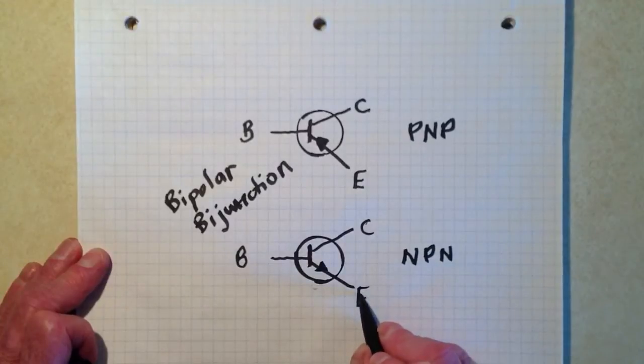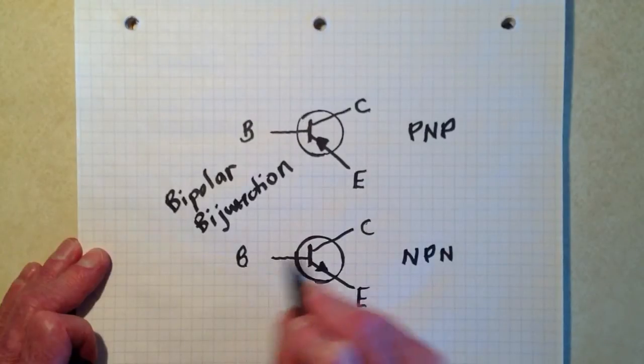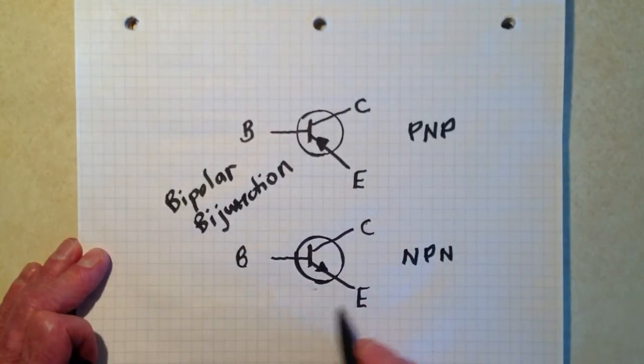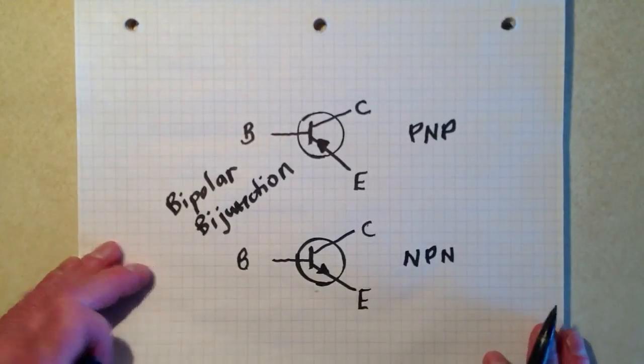Here we have the NPN. The emitter is N-type material. The base is P-type, and the collector is N-type. NPN. Those are the basic symbols.